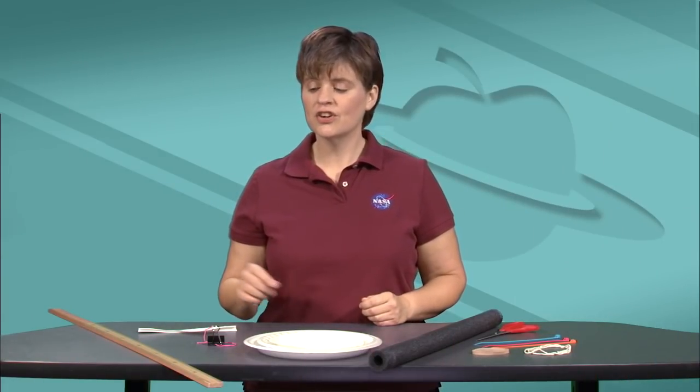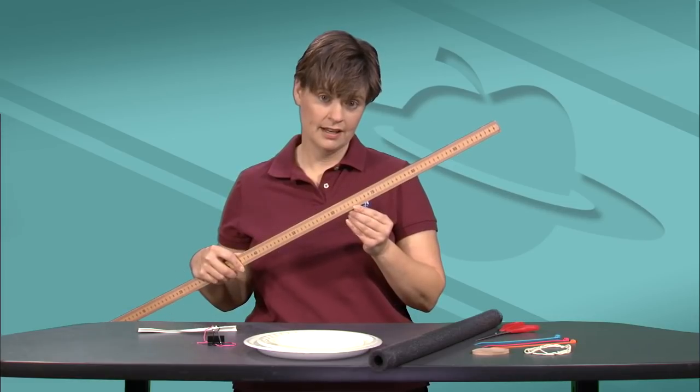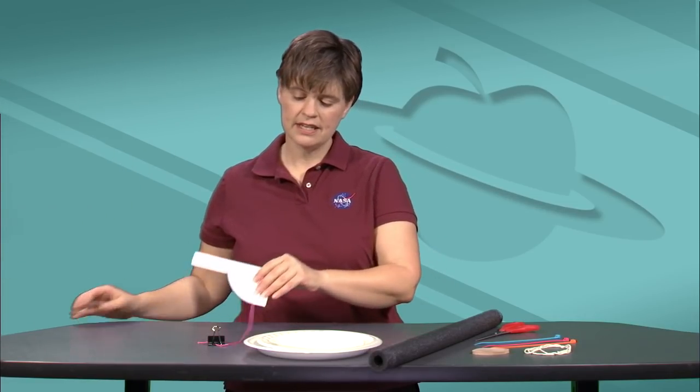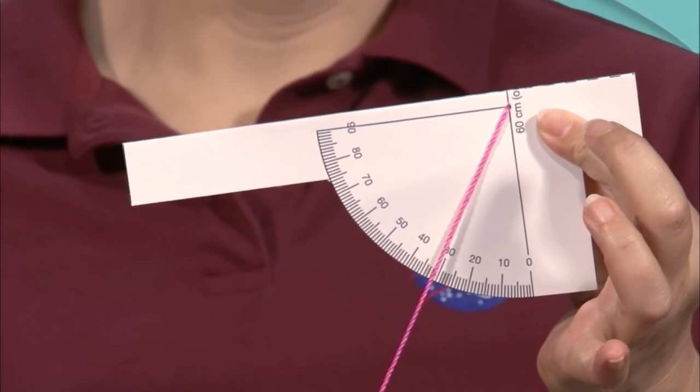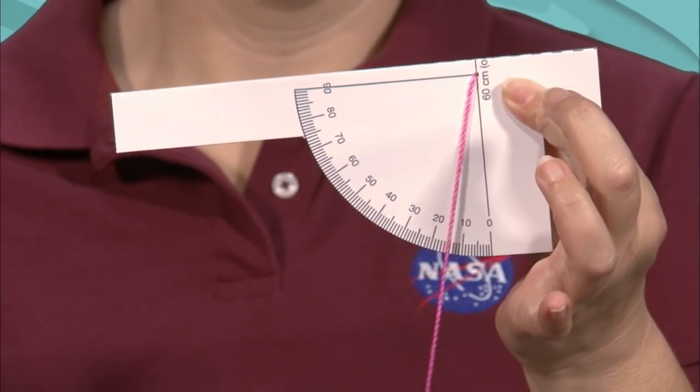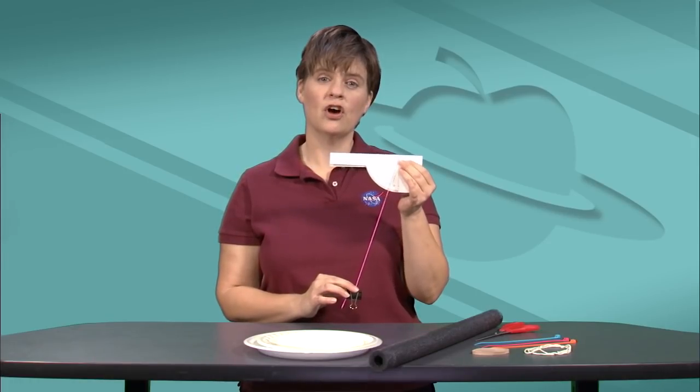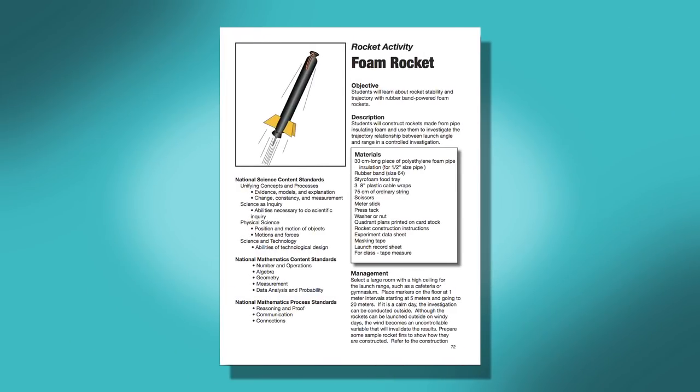For the math portion of the activity you're going to need a meter stick and you're going to need to make one of these elevation gauges. This will tell you what angle you're launching your rocket at. The plans for this are included in the PDF of the activity.